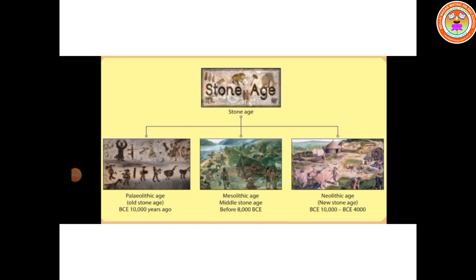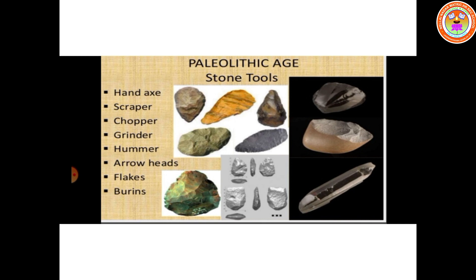Stone Age was the prehistoric period during which stones were used as weapons to make tools. Stone Age is divided into three periods: Old Stone Age, Middle Stone Age, and New Stone Age. Old Stone Age is called Paleolithic age, where people used stone tools made from barks of trees and bones. They lived in small groups and collected food from plants and trees, and also hunted animals. The stone tools used during the Paleolithic age include hand axe, scraper, chopper, grinder, hammer, arrowheads, and flakes.